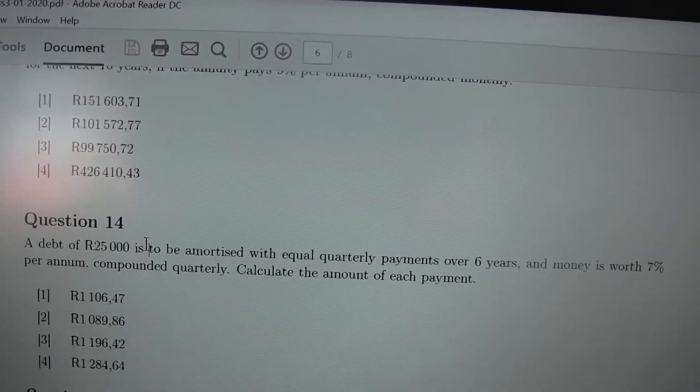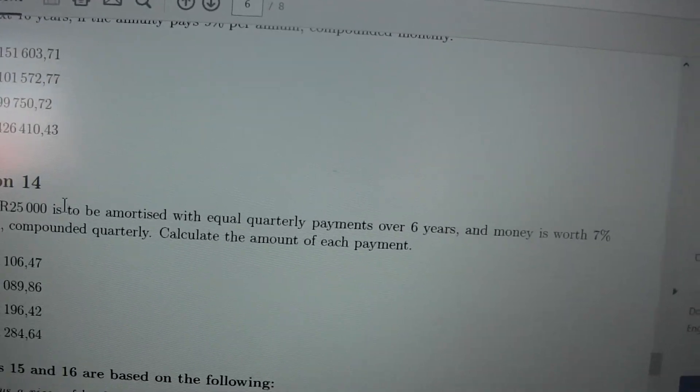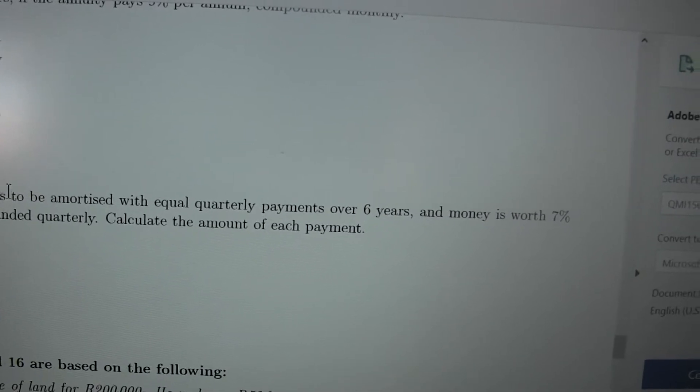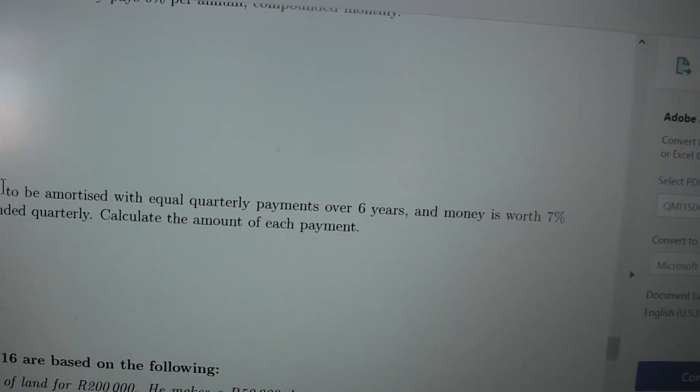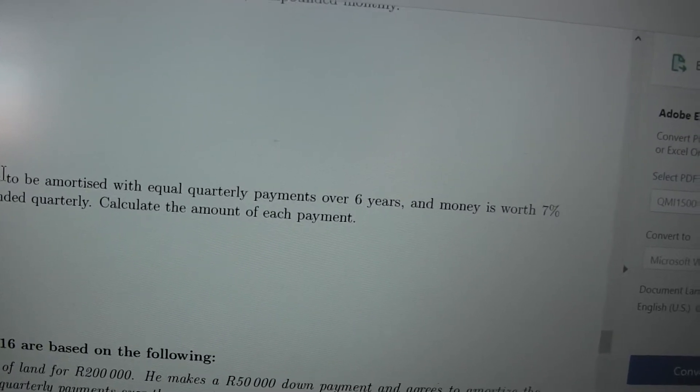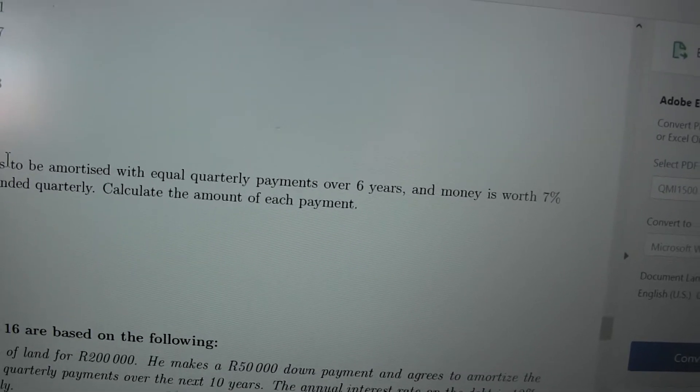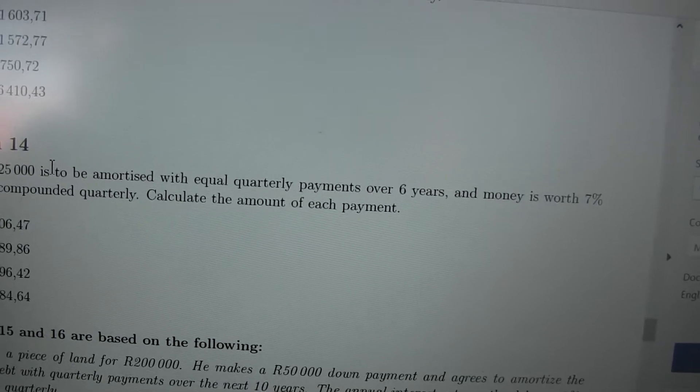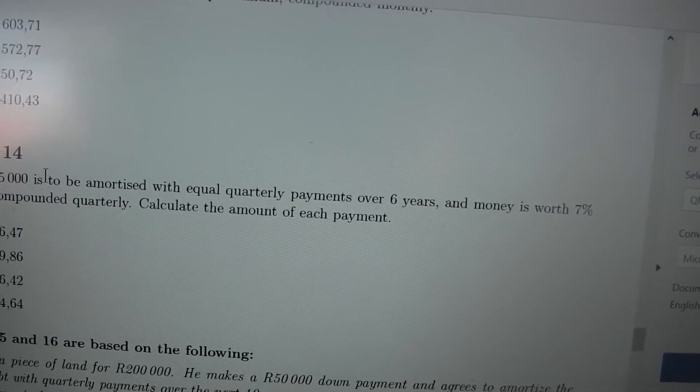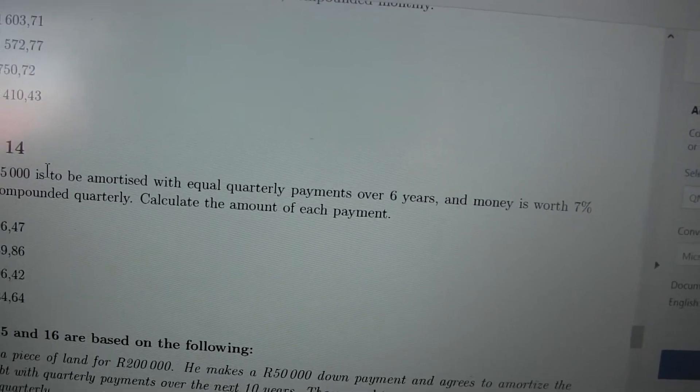Okay, so now question number 14. Question number 14 is a debt of $25,000 that is being amortized. Amortized means being split apart or reduced, with equal payments.